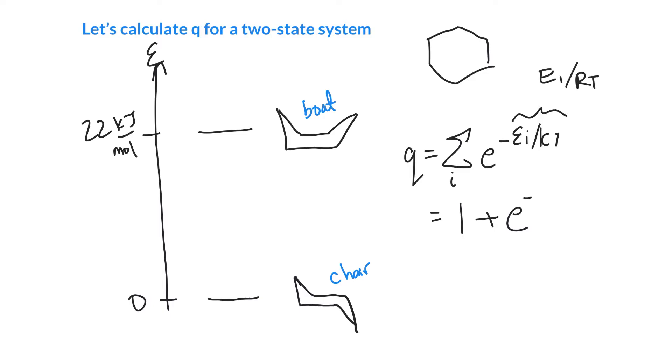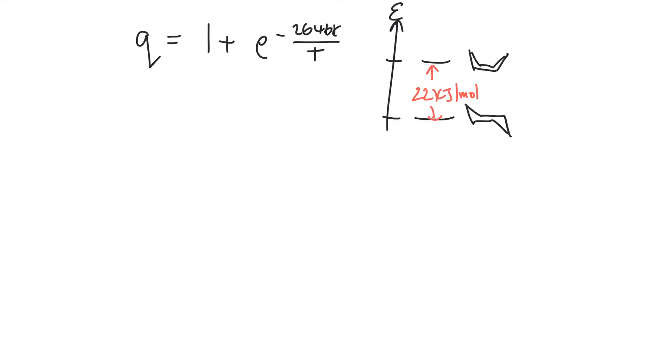So this would be minus 22,000 joules per mole over R, so our R is our gas constant, 8.3145 joules per mole Kelvin, times by our T. And we didn't specify a T yet, so we can go ahead and write that more generally as 1 plus E to the minus 2646 Kelvin over whatever temperature we pick. So we've got our expression for our partition function.